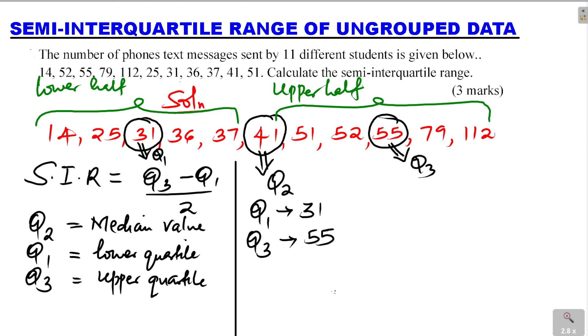Now we have Q1 and Q3, so we can get the semi-interquartile range. Remember, the semi-interquartile range is given by Q3 minus Q1 divided by 2. Therefore, semi-interquartile range equals 55 minus 31 divided by 2, which gives 24 divided by 2. So we get 12. That is how you get the semi-interquartile range of ungrouped data.